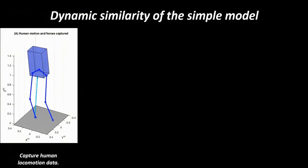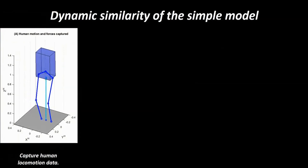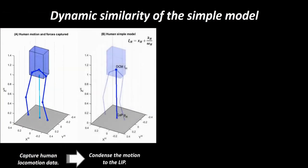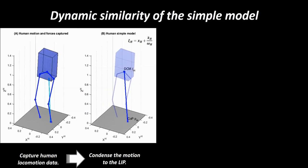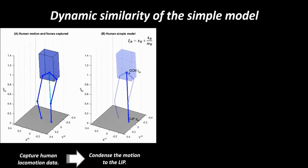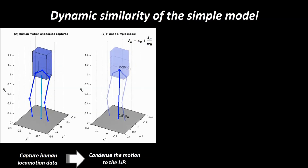To make the robot dynamically move in synchrony with the operator, we first capture human motion trajectory and condense this data using the pendulum model. The motion is fundamentally described by the translation of the center of mass and the center of pressure.